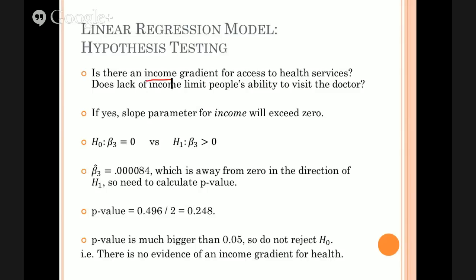One way that we can address that question is to ask this question here: Is there what we call an income gradient for access to health services? Namely, poor people can't afford to go to the doctor. So when you look at data like this, you would see a slope indicating richer people can afford it so they go to the doctor more. So that's what we talk about an income gradient.